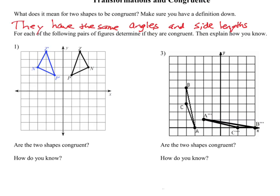First things first, you need to know what congruent means. Congruent means you have two shapes that have the same angles and the same side lengths — the same number of sides all the same length, and the same number of angles all the same. They're the same shape, same size.